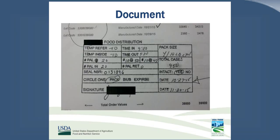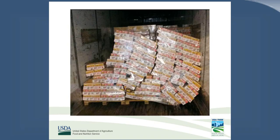Here is an example of how one state documents the arrival and acceptance of USDA loads using an ink stamp that captures the seal number, load temperatures, pack date, and case counts. This documents that you are consistently inspecting what you are expecting. If there is a future occurrence, this documentation can be a good reference. In our prior webinar, we offered the example of a load of USDA Foods that arrived with part of the load shifted during transit.